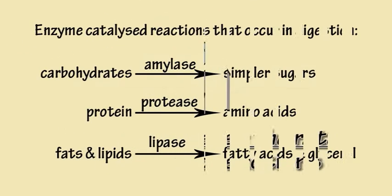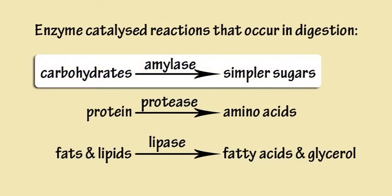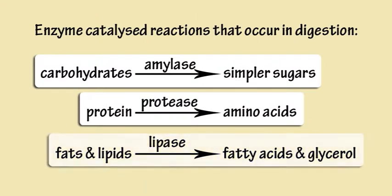For example, amylase catalyzes the conversion of complex carbohydrates into simpler sugars. Protease catalyzes the conversion of protein into amino acids. And lipase catalyzes the conversion of fats and lipids into fatty acids and glycerol.